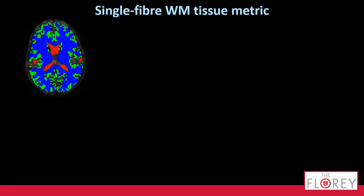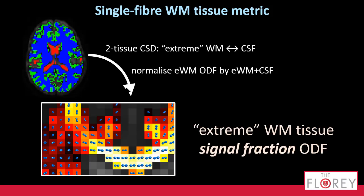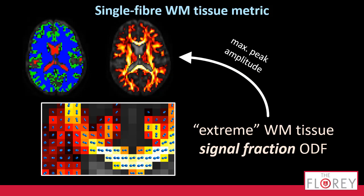This is how this goes down on data for real. This is the step just before we improve stuff, and we're going to work only on the blue part there. First we'll do this two-tissue CSD with this extreme artificial white matter response function and the CSF one. We will normalize the resulting ODF by the sum of those two compartments. So we have — and this is a mouthful — an extreme white matter tissue signal fraction ODF. The larger these ODFs are, the more we are up that line where we want it to be. And then of these ODFs, we compute the maximum peak amplitude, because we're after single-fiber voxels.